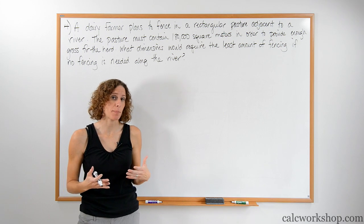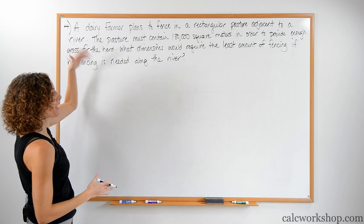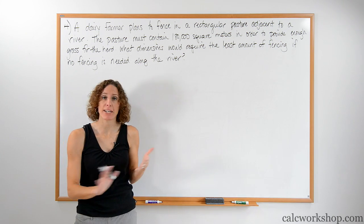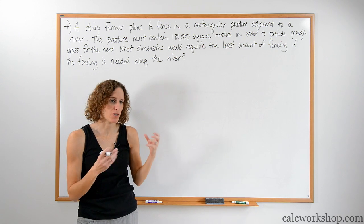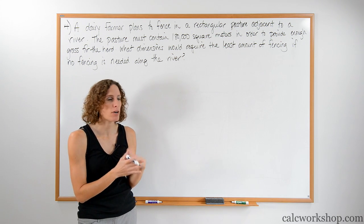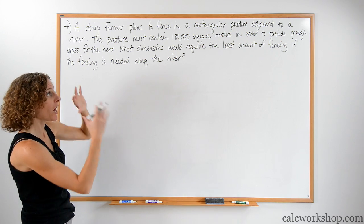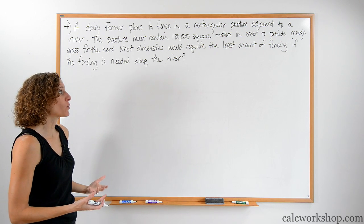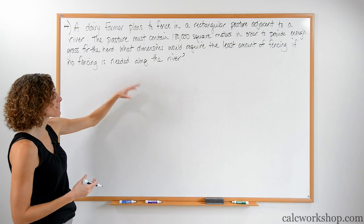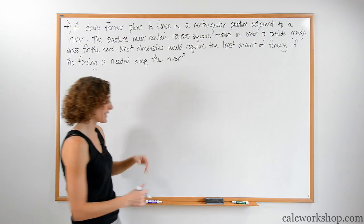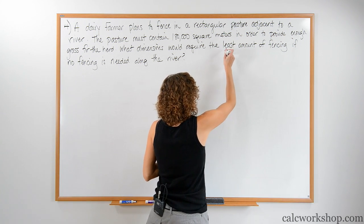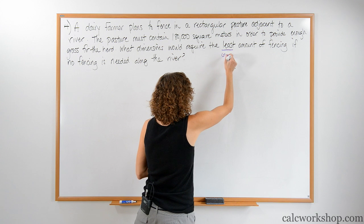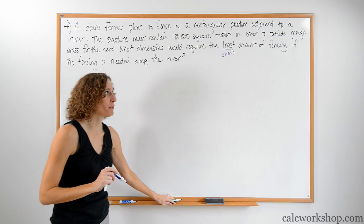Now let's look at a more applicable real-world example. A dairy farmer plans to fence in a rectangular pasture adjacent to a river. The pasture must contain 180,000 square meters in order to provide enough grass for the herd. What dimensions would require the least amount of fencing if no fencing is needed along the river? The word 'least' tells us this is a minimum — this is optimization, and I need to find two equations.